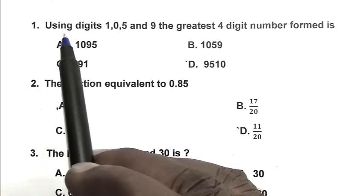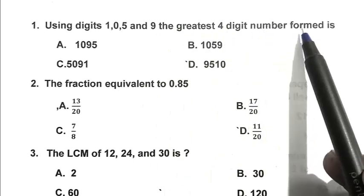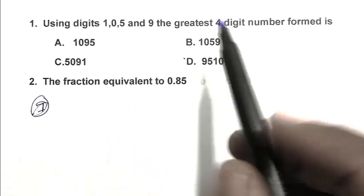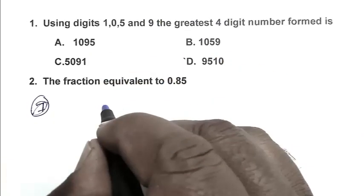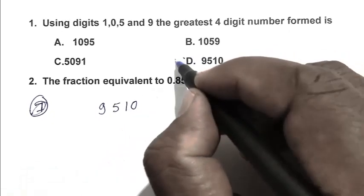Question number 1. Using digits 1, 0, 5 and 9, the greatest 4 digit number formed is. So friend, we have to calculate the greatest 4 digit number. We write the greatest digit first, that is 9 first, after that 5, after that 1, after that 0. So D is the right answer.